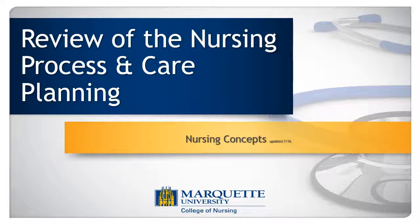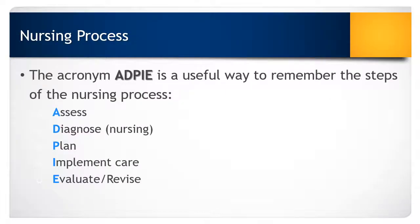Nursing care plans are the written representation of the nursing process. The nursing process is a five-step scientific process that can be identified by the acronym ADPIE. ADPIE is a useful way to remember the five steps of the nursing process. Step one is to assess, which would include both your health history and your physical assessment. Then you are going to make a nursing diagnosis based on the data you collected during your assessment step.